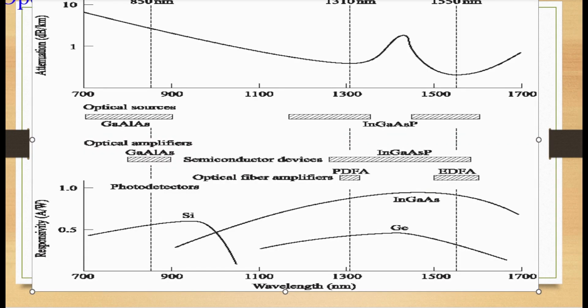So, the table defines bands which are known by the letters O, E, S, C, L and U. The 770 to 910 nm band is used for shorter wavelength multi-mode fiber system.